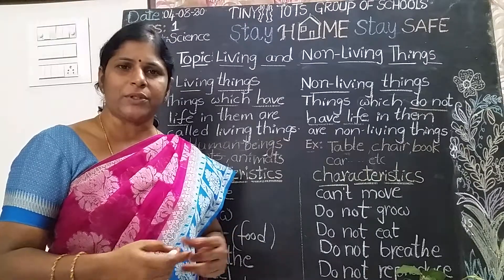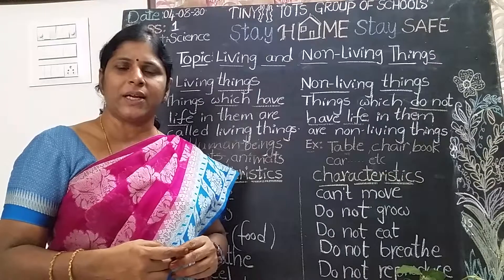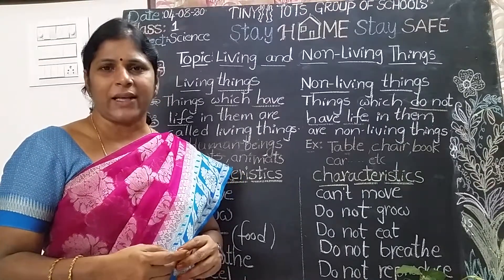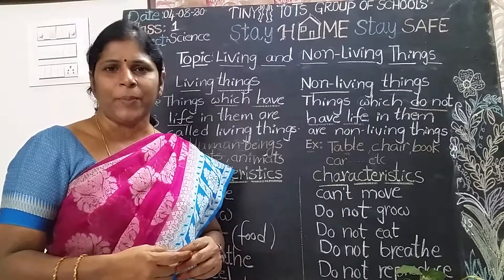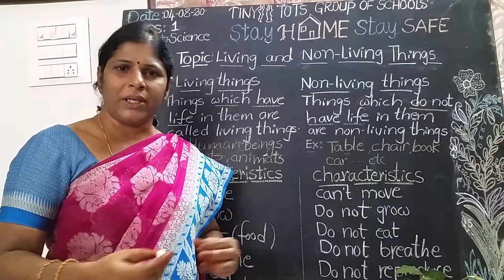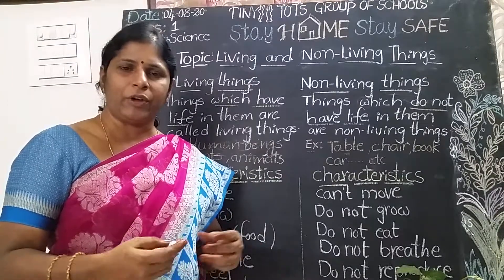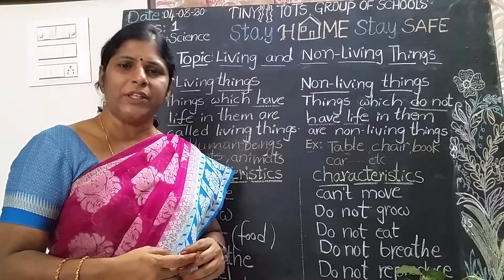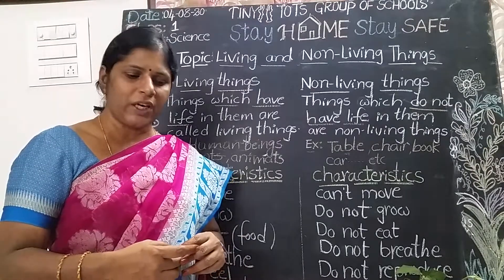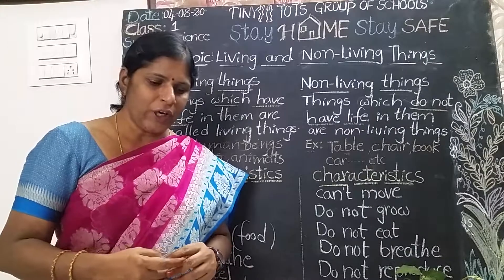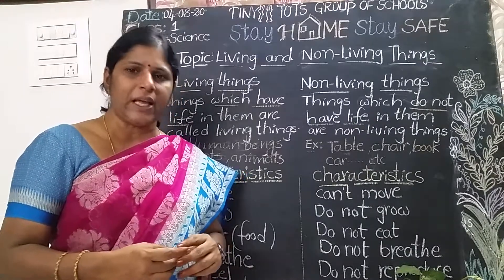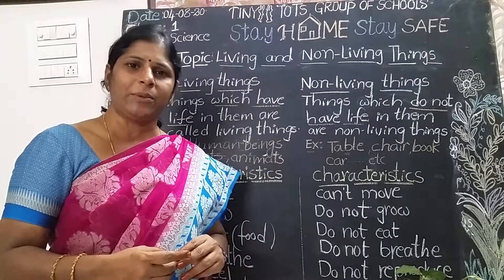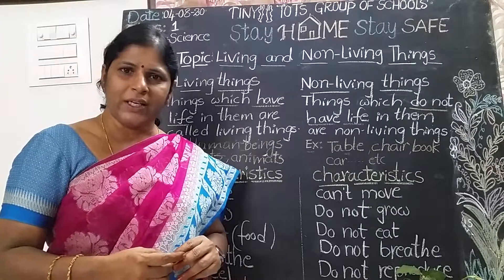Inside the house you observe tables, fans, dressing table, mixer grinder, gas stove, some toys, your mother, your dad, your brothers and sisters, and some plants. We observe many things around us, both inside and outside of the house.